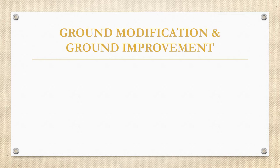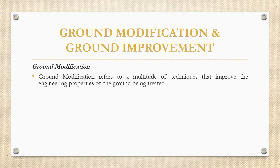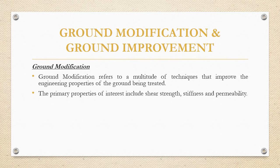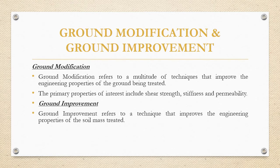What is the difference between ground modification and ground improvement? Ground modification refers to a multitude of techniques that improve the engineering properties of the ground being treated. It includes a number of ground improvement techniques for improving properties such as shear strength, stiffness, and permeability of the soil.